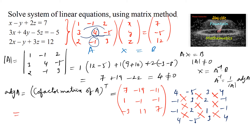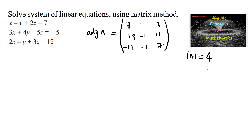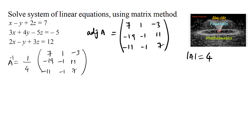And 4 plus 3 is 7. Taking the transpose of the cofactor matrix gives the adjoint: [7, 1, negative 3; negative 19, negative 1, 11; negative 11, negative 1, 7]. So A inverse equals 1 over 4 times this adjoint matrix [7, 1, negative 3; negative 19, negative 1, 11; negative 11, negative 1, 7]. Now X equals A inverse times B.